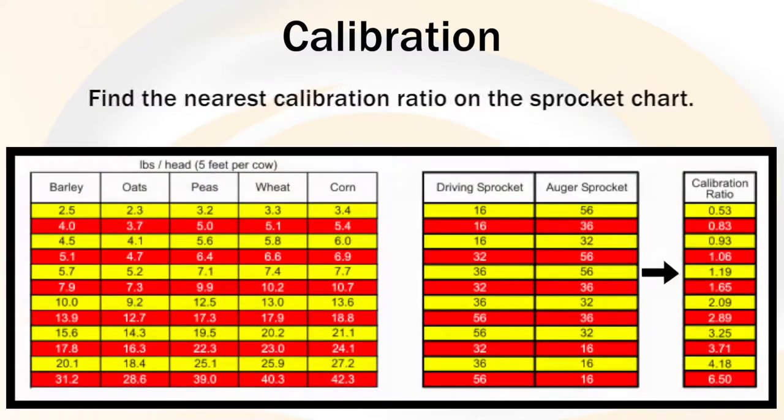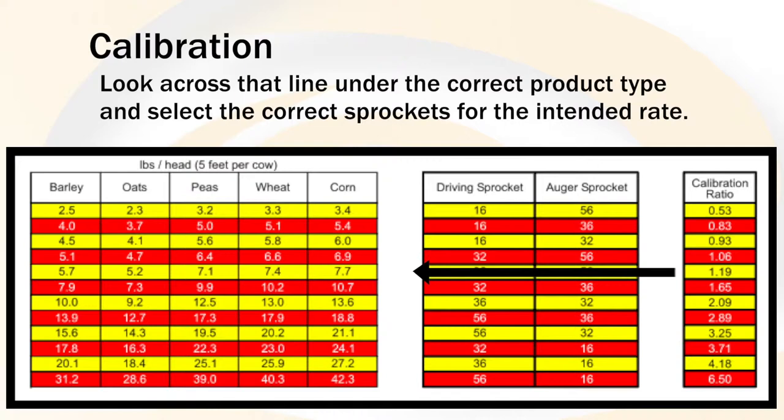Find the nearest calibration ratio on the sprocket chart. Look across that line under the correct product type and select the correct sprockets for the intended rate.